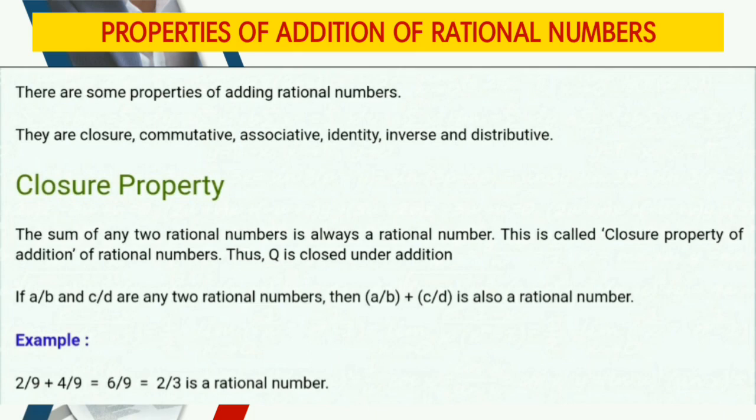For example, 2 upon 9 plus 4 upon 9 equals 6 upon 9, which simplifies to 2 upon 3. So 2 upon 3 is a rational number. We have added 2 upon 9 and 4 upon 9, and the result is also a rational number. This is the closure property.